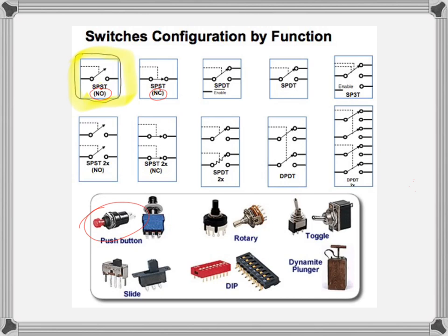The kind of switch we're particularly interested in for this lab is the SPDT — single pole, double throw. S stands for single, D stands for double, P is pole, T is throw. There's a single signal coming in or going out, and it can go to one of two places — either up or down. Those are the kinds of switches we're going to use in lab today.